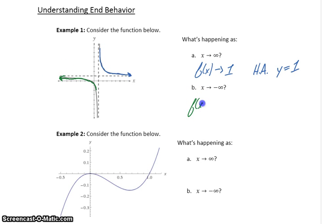So as x approaches negative infinity, f of x is approaching positive 1, and we have a horizontal asymptote at y equals 1.